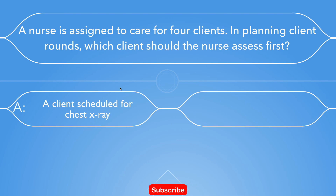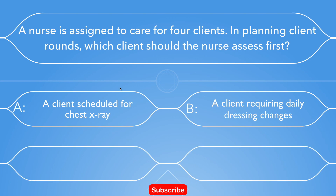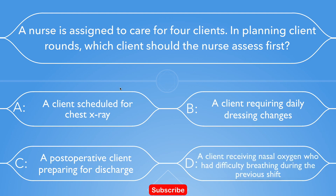Option A: a client scheduled for a chest x-ray. Option B: a client requiring daily dressing changes. Option C: a post-operative client preparing for discharge. Option D: a client receiving nasal oxygen who had difficulty breathing during the previous shift.